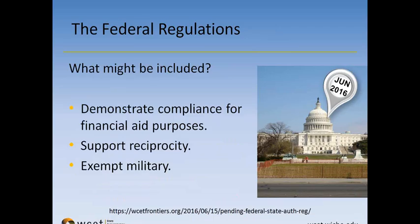Since they haven't talked to anyone, we're thinking they're going to go back to what they proposed in the failed negotiated rulemaking from two years ago. Here are some things we may see: First, demonstrating compliance for financial aid purposes — if you have students in another state receiving federal financial aid, you need to demonstrate you have approval from that state or are operating legally there. We're hoping implementation might not be for a couple of years yet, but it probably won't be too long since we've all known about this for so long.